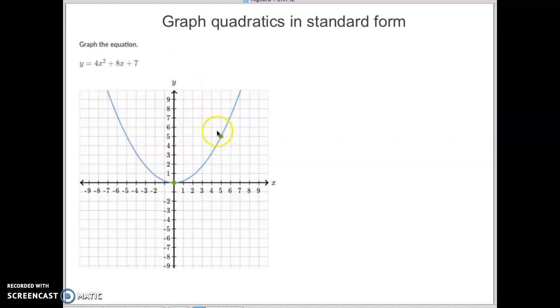First of all, the y-intercept dot right up here should be an easy one because that's given to you right here. Your y-intercept is when x equals 0, so if x equals 0, then your y-intercept will equal 7. So we know we're going to put one dot right here.